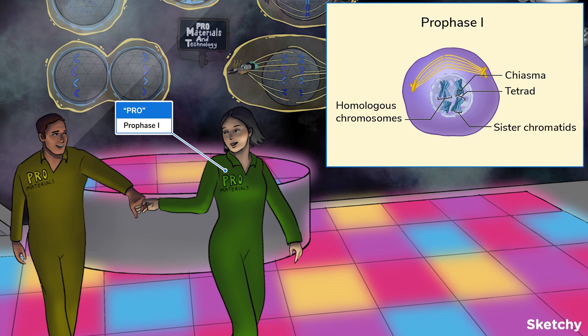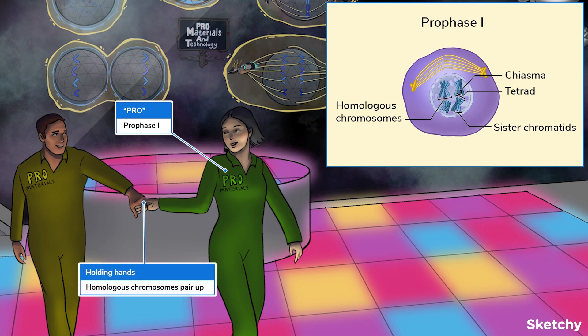Here's where things get homologous. The homologous chromosomes are chromosomes that carry the same genes, one from each parental source. Homologous chromosomes are also present in mitosis, but in mitosis they don't pair up with their partner. In prophase I, however, they pair up to make what's known as a tetrad. This is depicted by the cute couple pairing up on the dance floor. This pairing is also called synapsis.